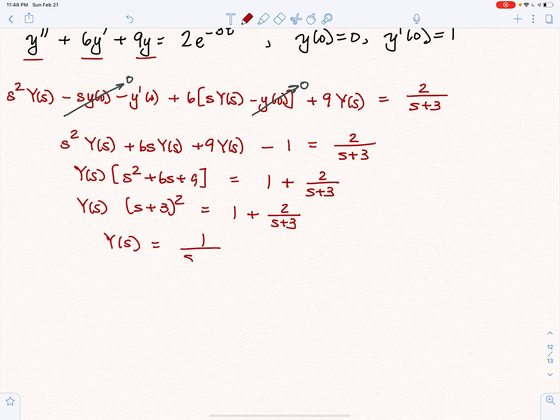Because if I divide by S plus 3 squared, I get 1 over S plus 3 squared plus 2 over S plus 3 to the third. Those are both transforms that I know. So we are just inches away from getting Y of T.